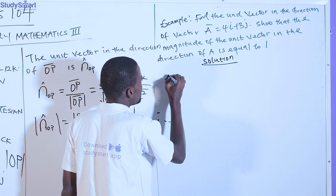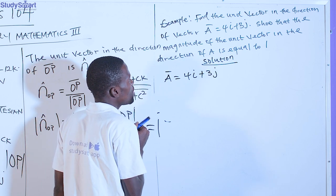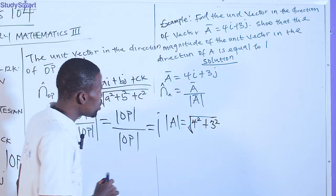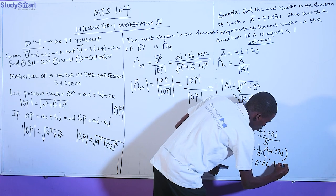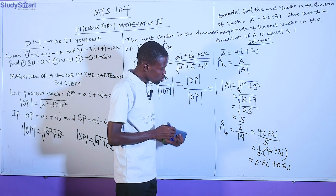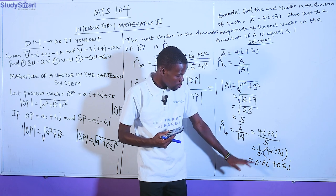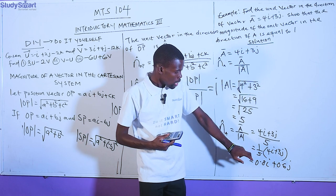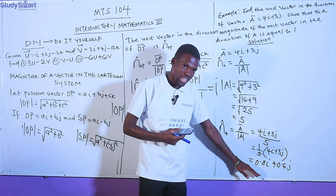We have vector a equal to 4i plus tbj, giving 0.6j. In your options you might see different forms. In the situation whereby you see two similar-looking options, go for the last one if both appear together in your options.